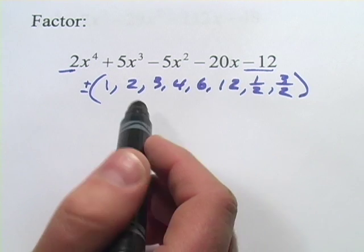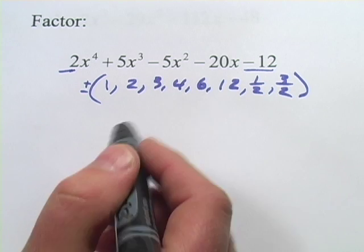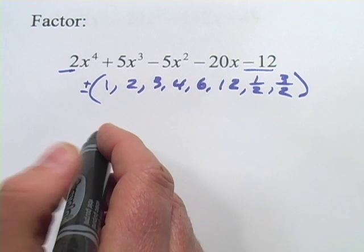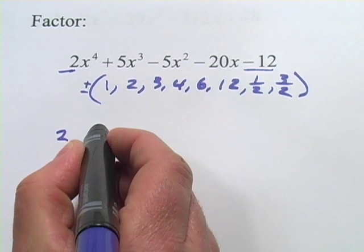So we can pick from this list. As you can see, there's quite a few to pick from. So we kind of have to do some trial and error. Maybe we'll get lucky, maybe we won't get lucky. But let's give it a try. We'll set this one up. I'm going to put the coefficients from all my terms in order.